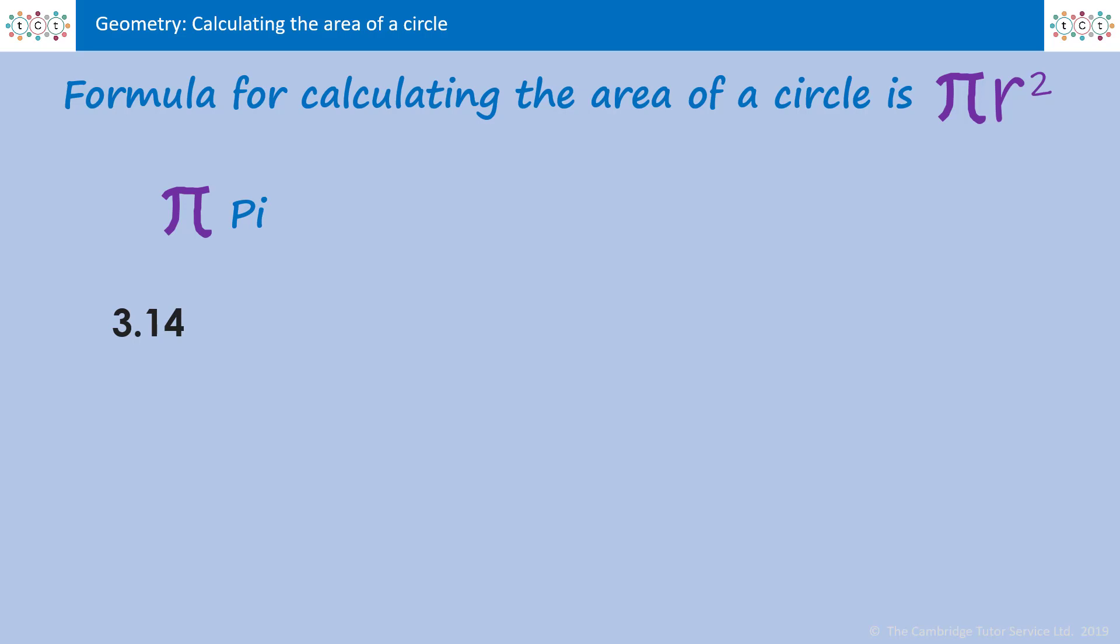The next bit of that formula, if you remember from algebra, when you just put numbers and letters together that just means we're multiplying them. So pi r means pi times by r, and r is the radius of the circle.